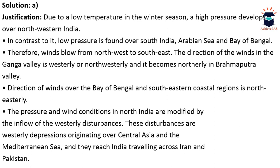Due to low temperature in winter season, a high pressure develops over northwestern India. In contrast, low pressure is found over south Asia, the Arabian Sea, and the Bay of Bengal. Therefore winds blow from northwest to southeast. The direction of winds in the Ganga valley is westerly or northwesterly, northerly in the Brahmaputra valley, and northeasterly over the Bay of Bengal and southeastern coastal regions. These conditions are modified by westerly disturbances originating over Central Asia and the Mediterranean Sea, traveling across Iran and Pakistan.